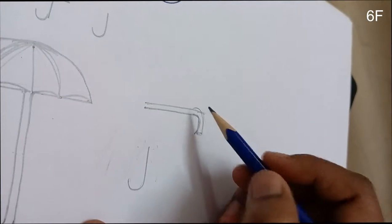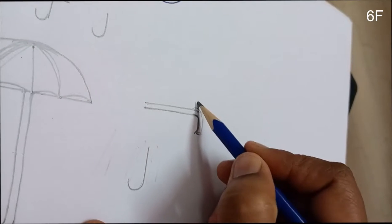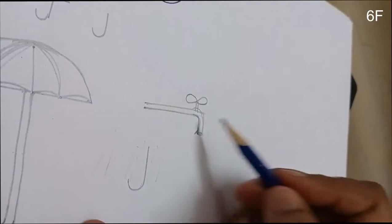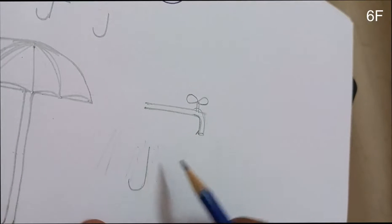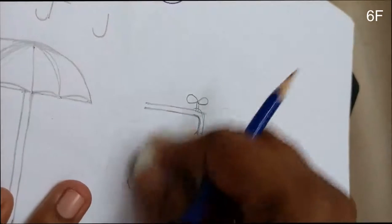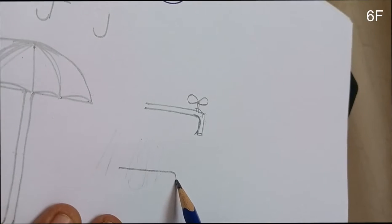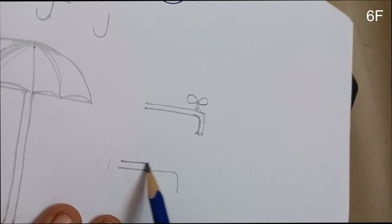That's it - this is a tap. If you want, I can explain once again: sleeping line, small bend, and standing line.